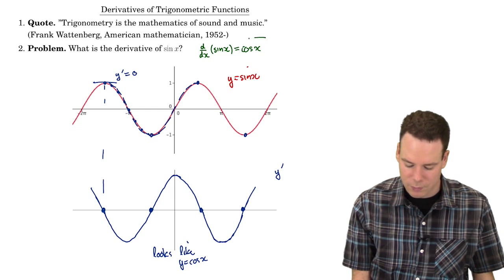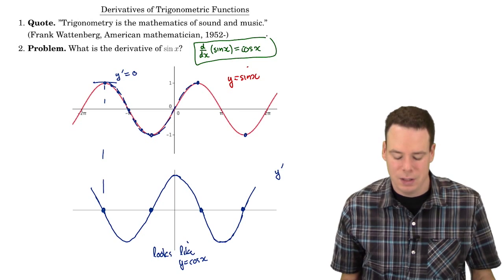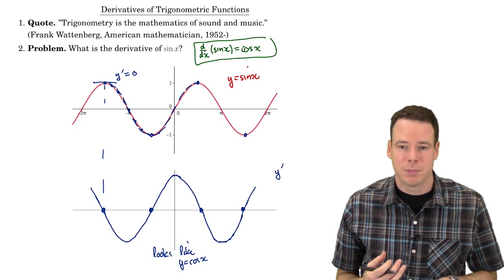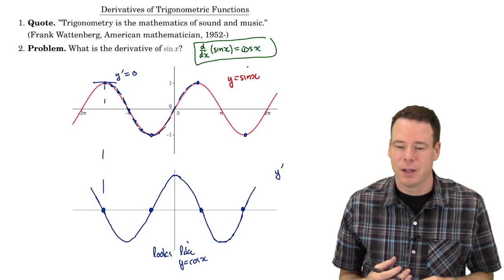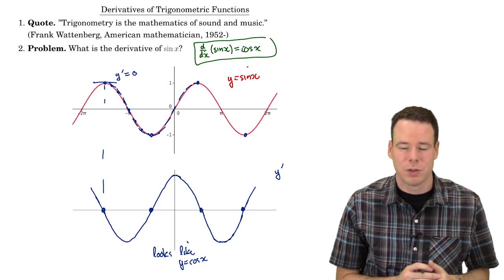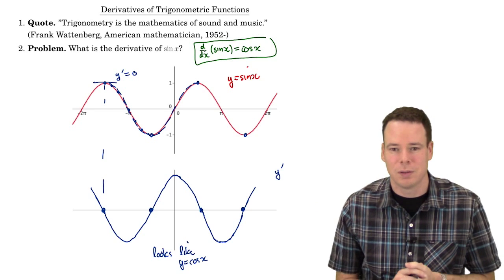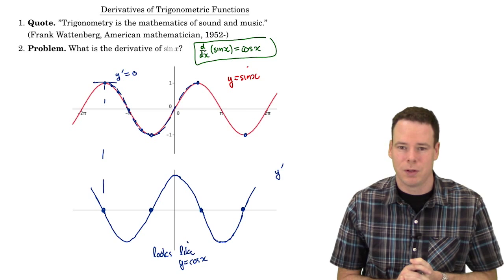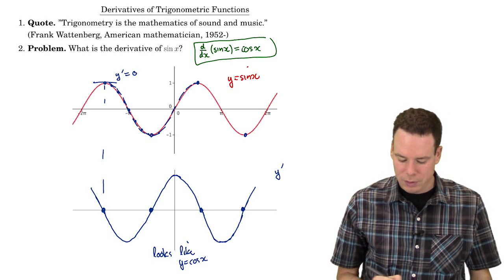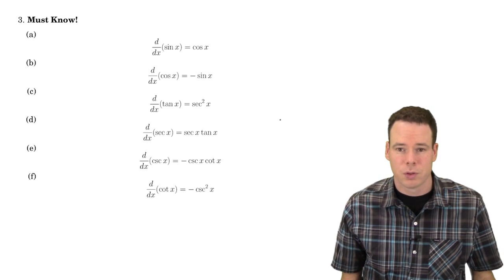We're going to verify this. The only thing we have to verify — that the sine function's derivative is really cosine of x — is to go right back to the definition of derivative. So let's have a look at a list of all the various trig functions and their corresponding derivatives.